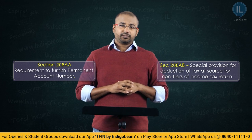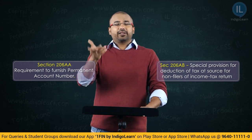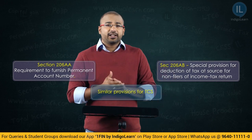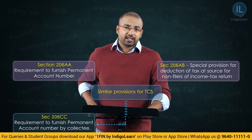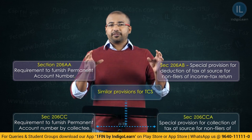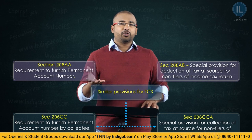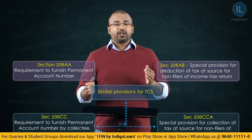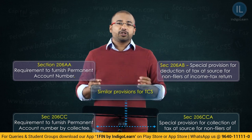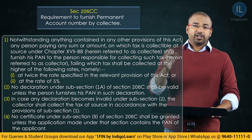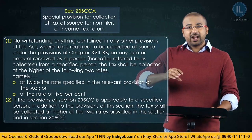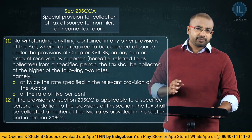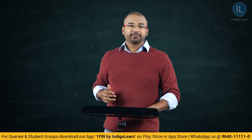Are we clear with these two sections — Section 206AA and 206AB? Remember: both these sections are for provisions of TDS. Similarly, you have provisions for TCS also, covered in Section 206CC and Section 206CCA. Provisions of TDS, if you understood, automatically once you read the TCS provisions you will understand the intentions are the same — 206CC talks about furnishing of PAN, and 206CCA is for non-filers.